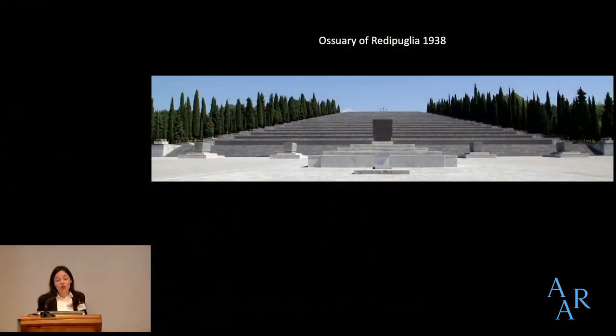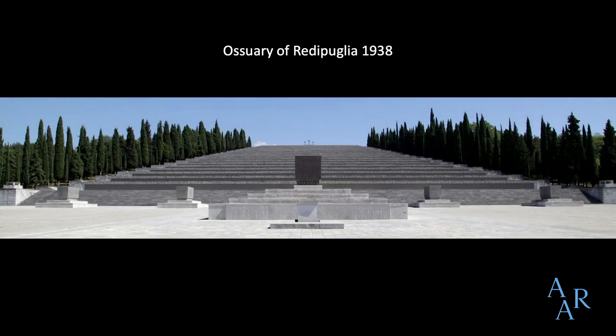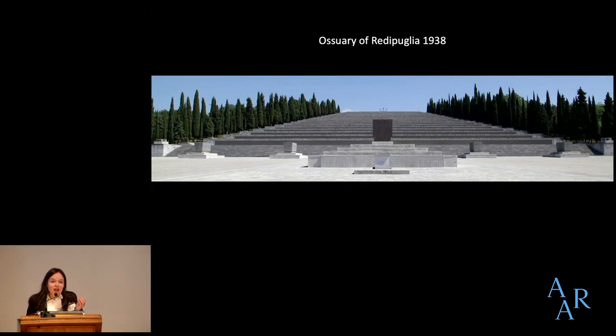Buon pomeriggio a tutti. I hope you're ready to think about mortality. The monument of Redipuglia houses the remains of over 100,000 Italian soldiers who died fighting in the First World War. Built in the late 1930s, Redipuglia is one of a group of ossuaries or bone depositories that were created by the fascist state.